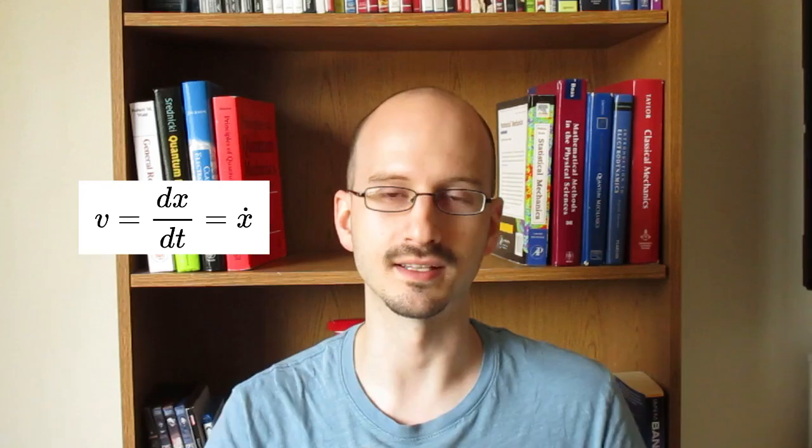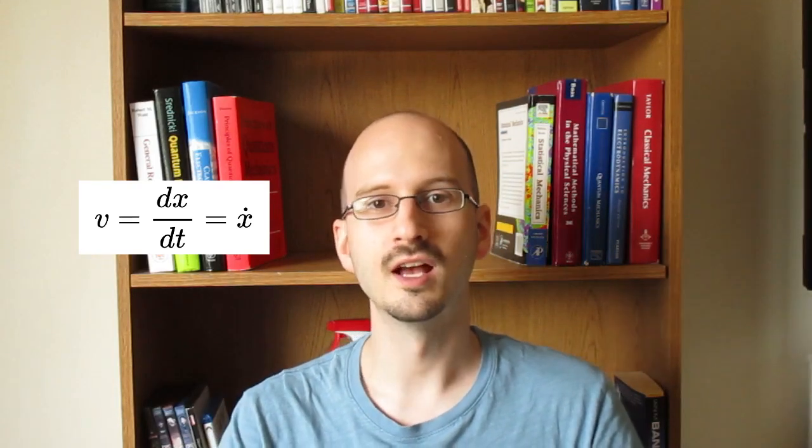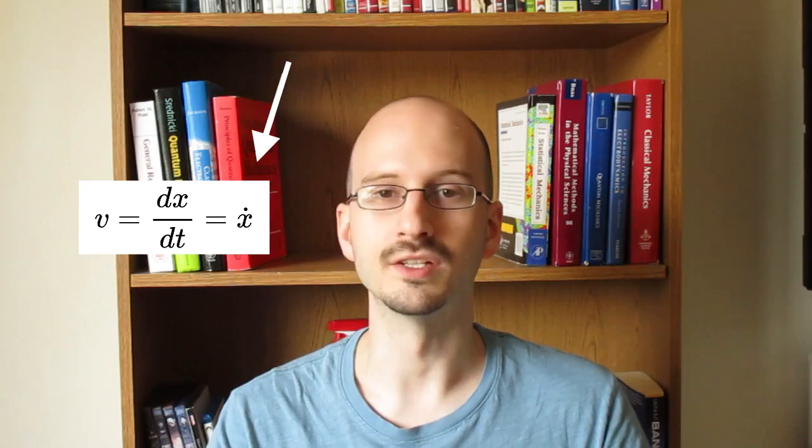And because it's calculus, we don't have to average the velocity over a time interval, but we can talk about the velocity at a single instant in time. Now I'm going to introduce some notation right off the bat. This is something that you don't see in freshman physics class, but when you have a quantity with a dot on top of it, that means the time derivative. That means the rate of change over time. So velocity is going to be written as x dot.